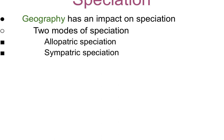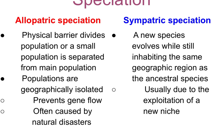Geography has impacted speciation more so than anything else, and there are really two modes at which this happens. We call them allopatric and sympatric. Allopatric speciation is when there has been a physical barrier that has divided a population into separate populations from a main population. These populations are geographically isolated, preventing gene flow, and this is usually often caused by natural disasters.